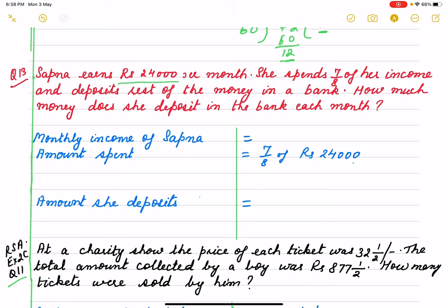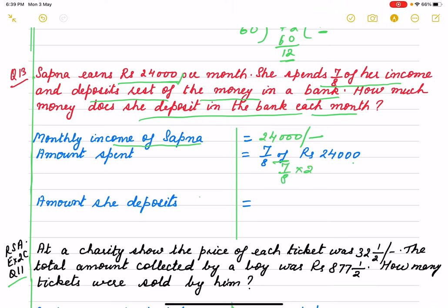The third question: Sapna earns rupees twenty-four thousand per month. She spent seven by eight of her income and deposits the rest in a bank. How much money does she deposit? Monthly income of Sapna is twenty-four thousand rupees. She spent seven by eight of this — 'of' means multiply — so seven by eight of twenty-four thousand. Cancelling gives three thousand times seven, which is twenty-one thousand. So she deposits twenty-four thousand minus twenty-one thousand, which is three thousand rupees.